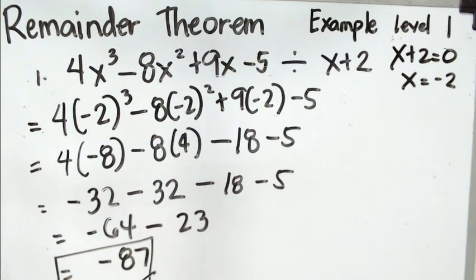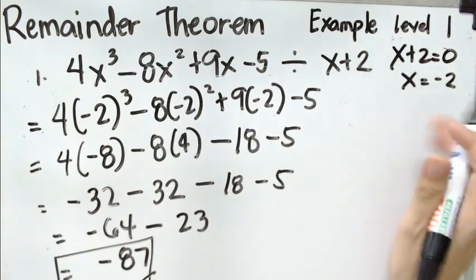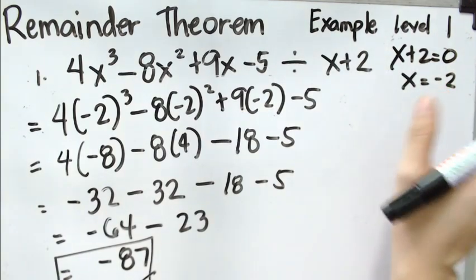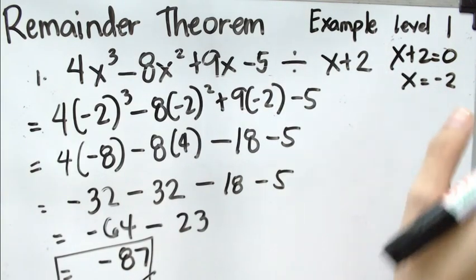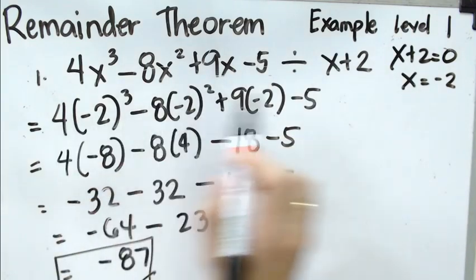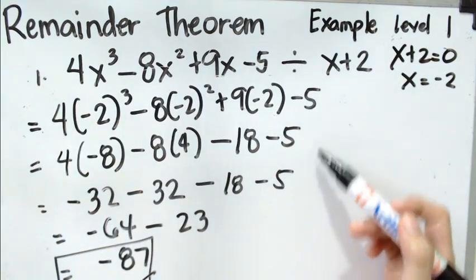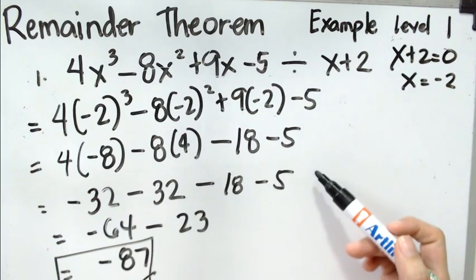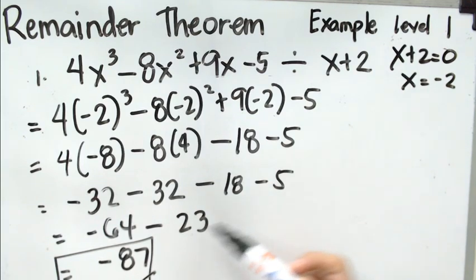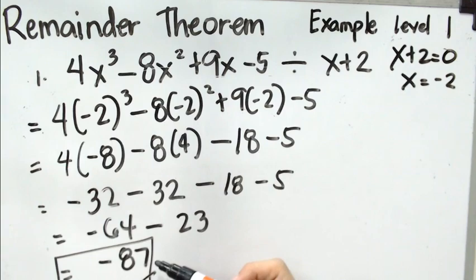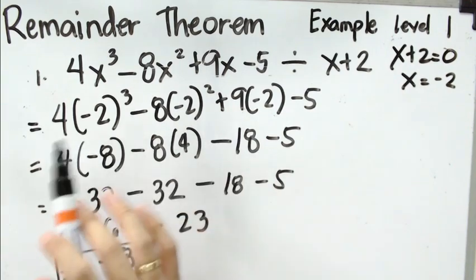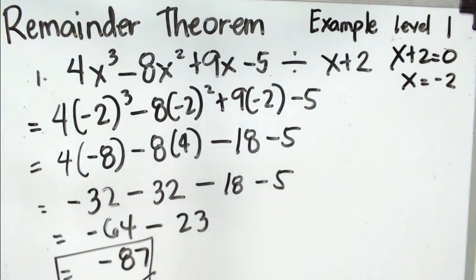Again, when we say remainder theorem, we simply equate the divisor to zero, then use that value to evaluate or substitute into the polynomial. After substituting, we compute and calculate, and the final answer will be the remainder of the given problem.